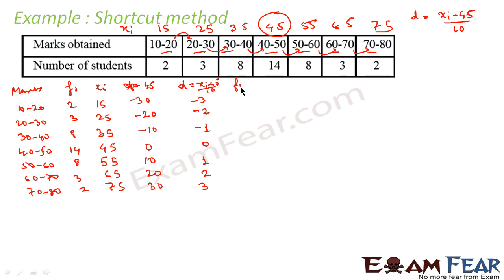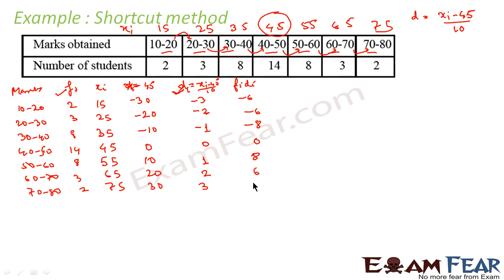Now we have to find fi·di. We multiply the frequencies by the corresponding d values: 2 × (−3) = −6, 3 × (−2) = −6, 8 × (−1) = −8, 14 × 0 = 0, 8 × 1 = 8, 3 × 2 = 6, 2 × 3 = 6. We add these values because Σfi·di is required for the formula.